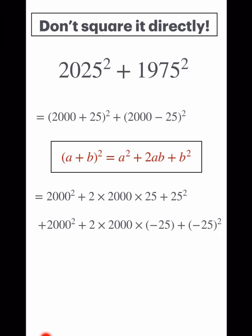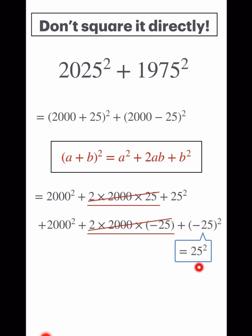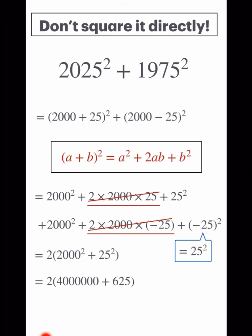Now look at the middle terms — they cancel each other out. And the square of minus 25 is the same as the square of 25. So we now have 2 times (2000² + 25²), that is, 2 times (4,000,000 + 625), which equals 8,001,250.